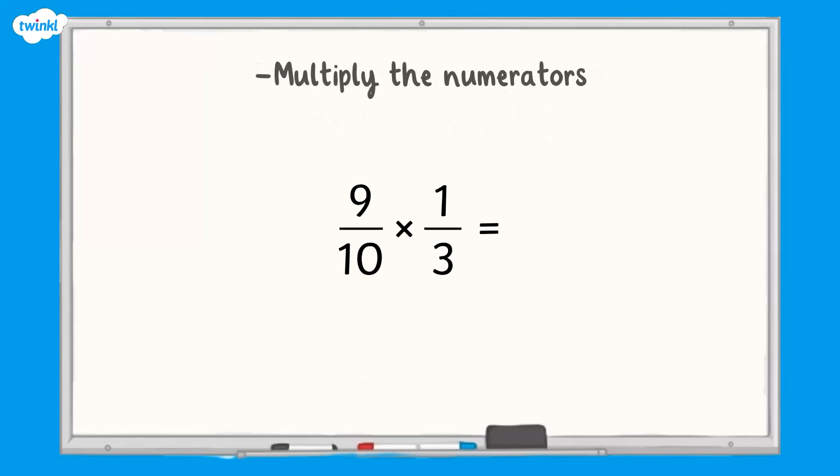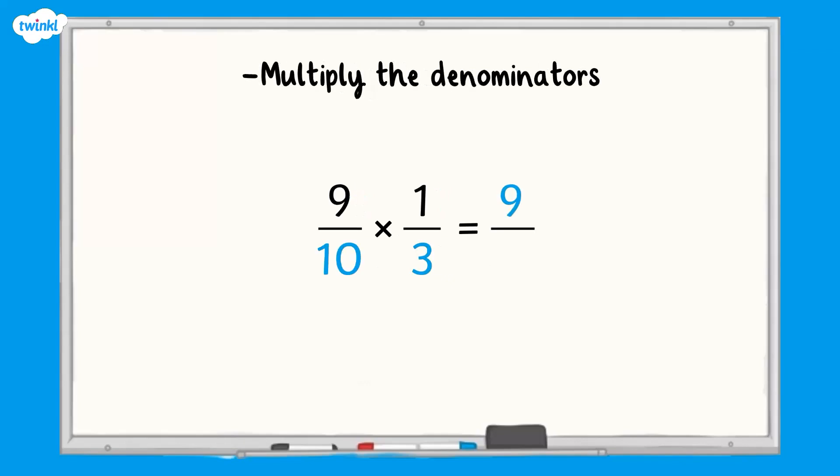Now we complete the multiplication, so we begin this by multiplying the numerators to find the numerator of the answer. 9 multiplied by 1 equals 9. Then we multiply the denominators to find the denominator. 10 multiplied by 3 equals 30.